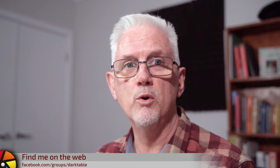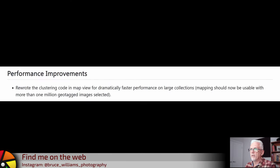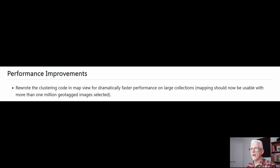So that's it for the big ones. Now we move on to the performance enhancements. Rewrote the clustering code in MapView for dramatically faster performance on large collections. Mapping should now be usable with more than 1 million geotagged images selected. Wow. I would love to be able to show you that,